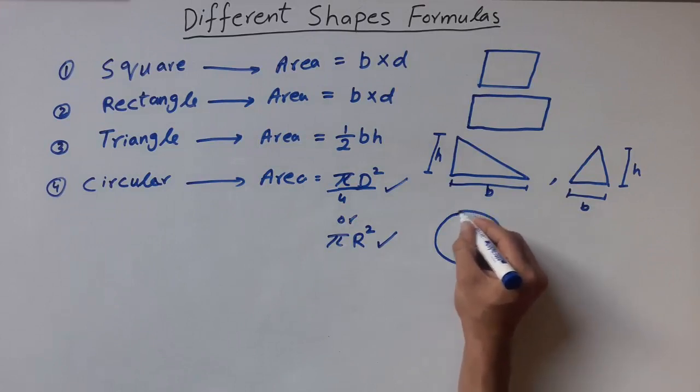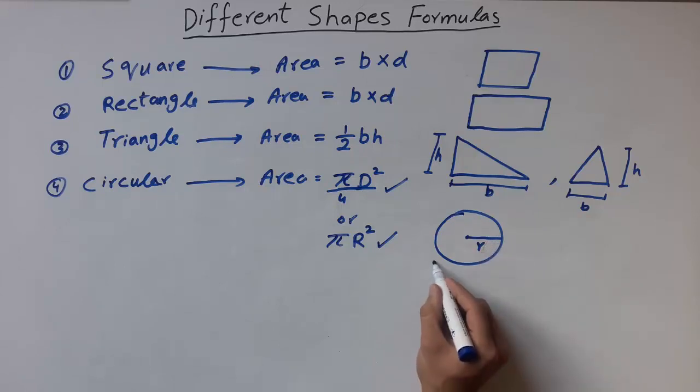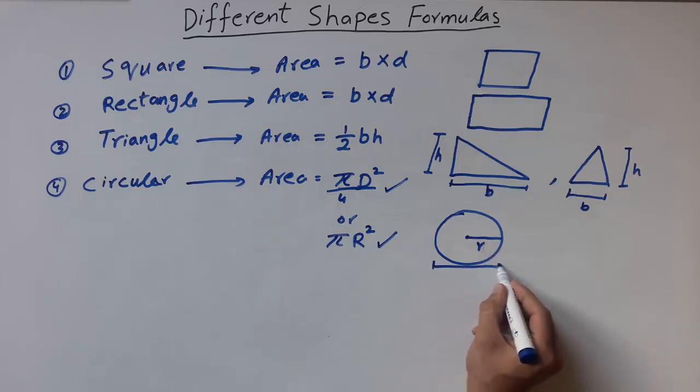This is a circle. From center line to the left end or to the right end is a radius. From first end to the last end, this is a diameter.